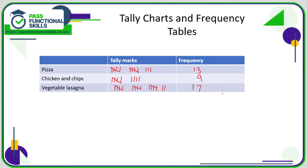The total of the frequency should be the number of children you asked, assuming they all gave you a response. So we could work out the total number of children: seventeen plus thirteen is thirty, plus nine, so the total number of children is thirty-nine. One key feature of a tally chart is having this frequency column so that we can translate the tally marks into more easy-to-deal-with numbers.